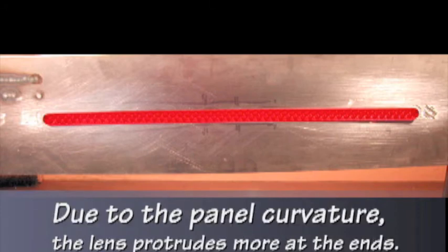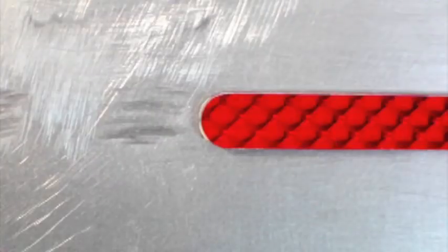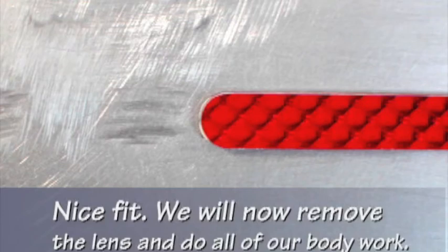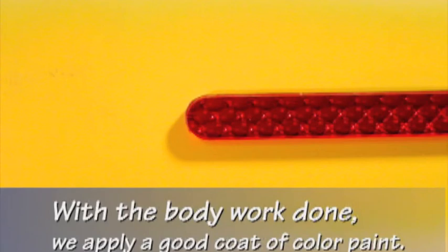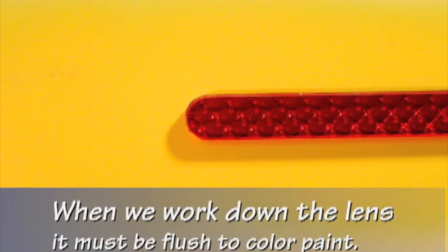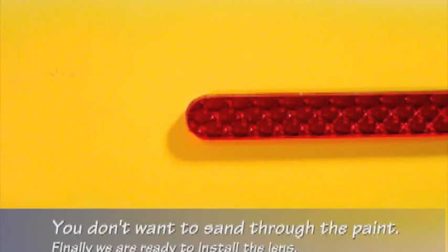Due to the panel curvature, the lens protrudes more at the ends. Nice fit! We will now remove the lens and do all our body work. With the body work done, we apply a good coat of color paint. When we work down the lens, it must be flush to color paint. You don't want to sand through the paint.